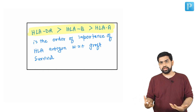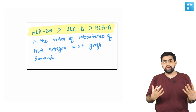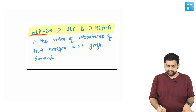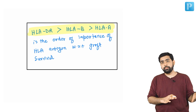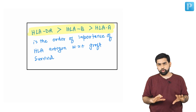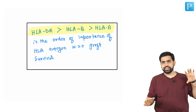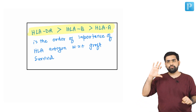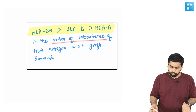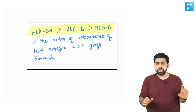Out of HLA-A, B, and DR, the sequence of importance for graft survival is: HLA-DR has the maximum importance, followed by HLA-B, and then HLA-A. Please remember this order of importance of HLA antigens with respect to graft survival.